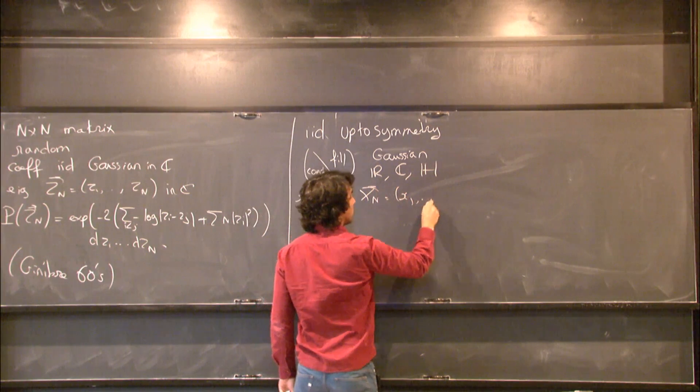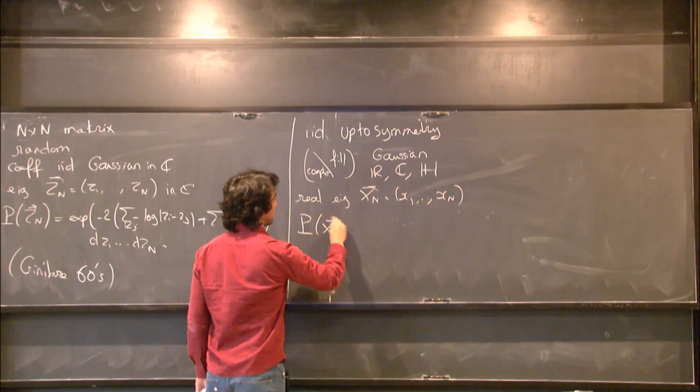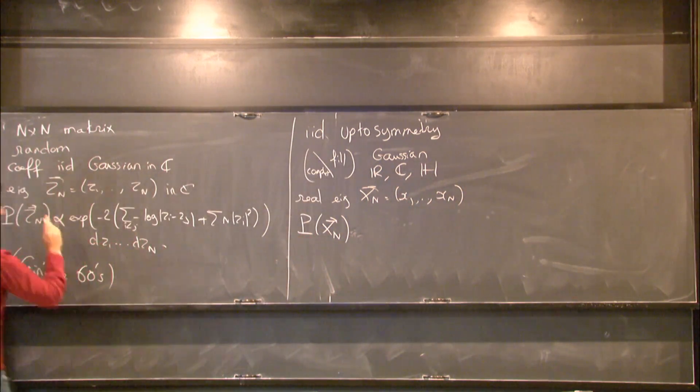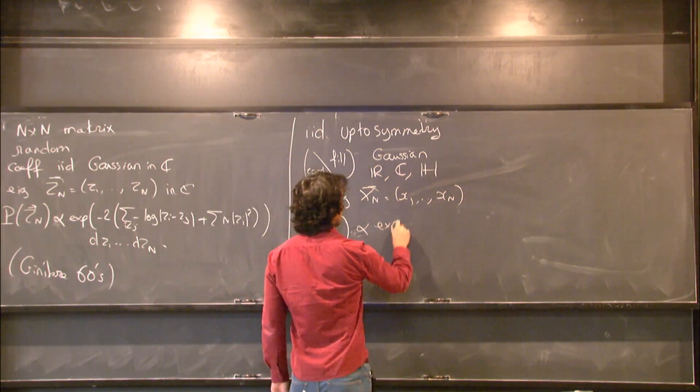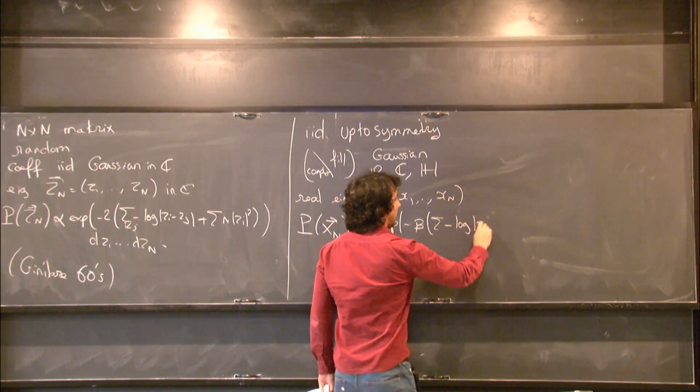And you can ask the same question, what's the probability of observing a certain interval? And so sorry, I should not say equal, it's proportional to. There's just a normalization constant. Well, and then you get the same thing.